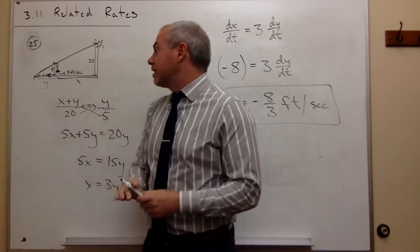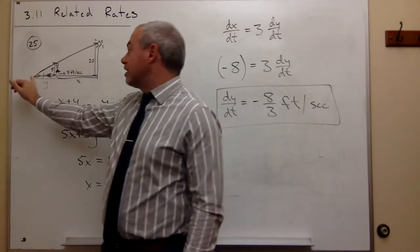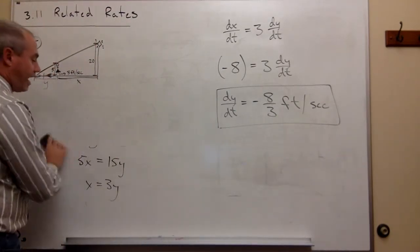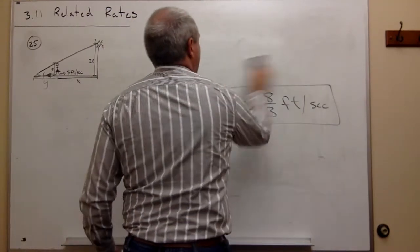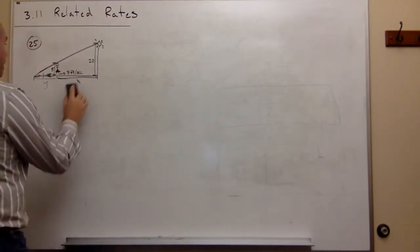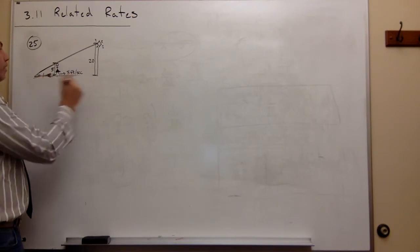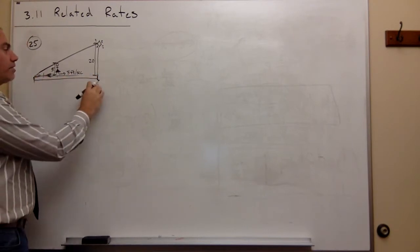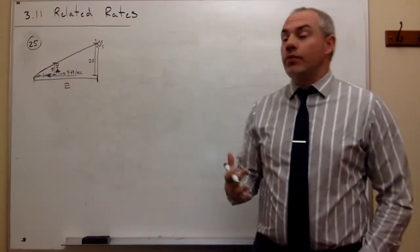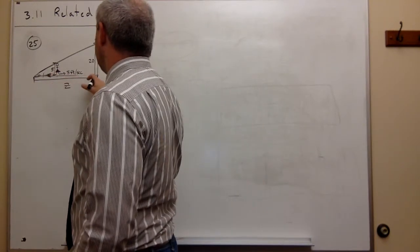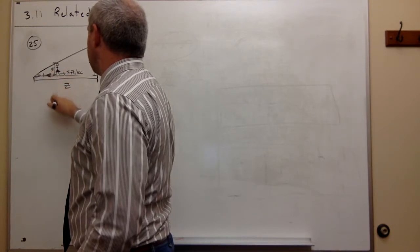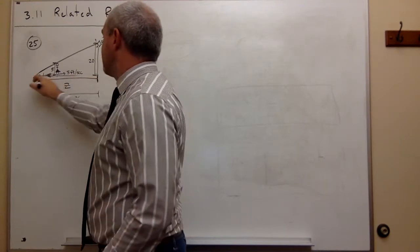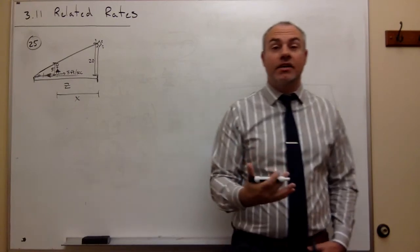That's a different question — we no longer care about the length of the shadow, just the position of the tip of the shadow relative to the streetlight. Let's rethink the problem. The length from the tip of the shadow to the streetlight I'll call z, and the distance from the woman to the streetlight I'll again call x.